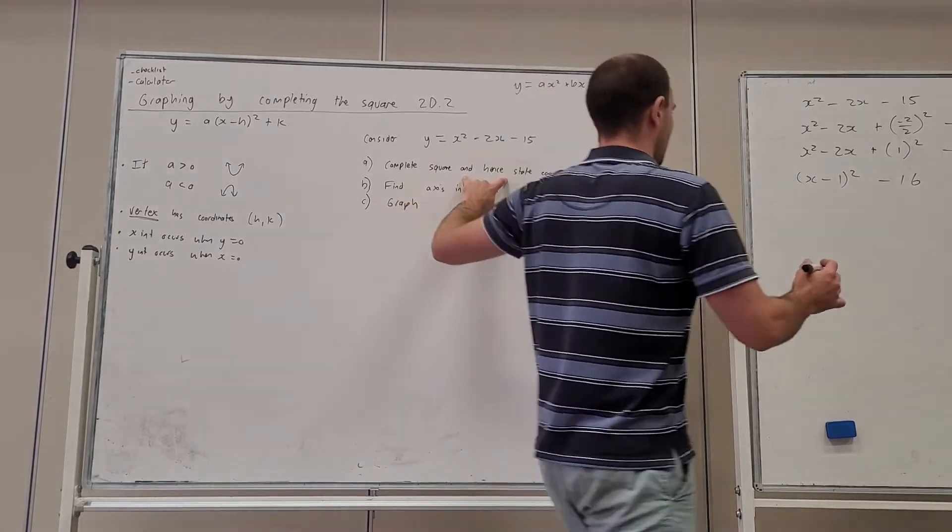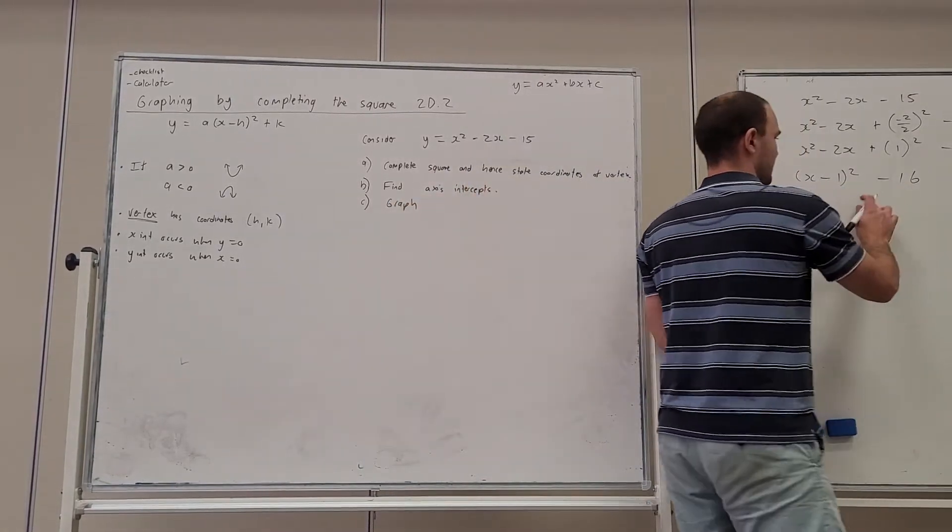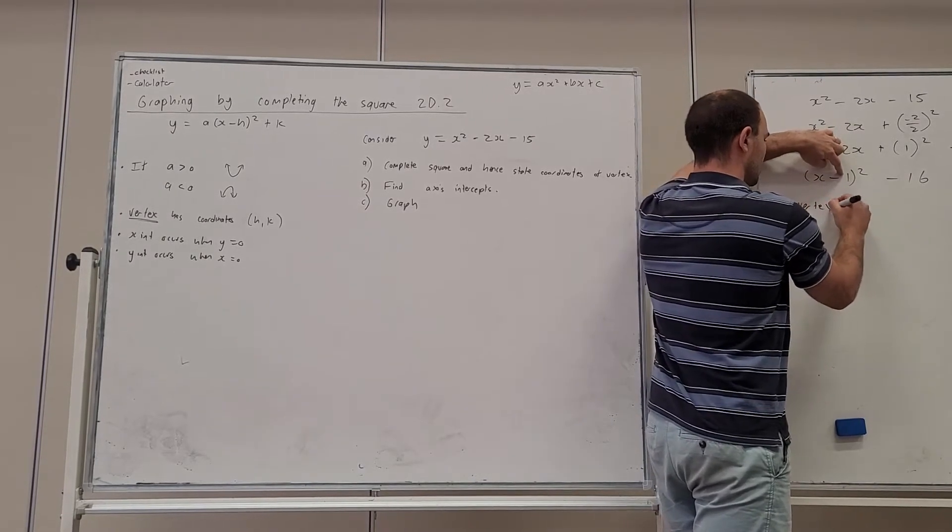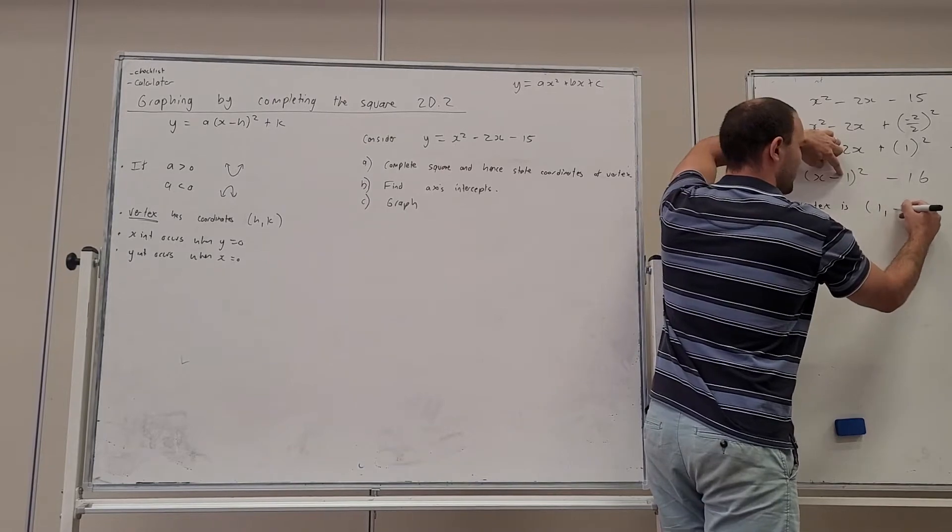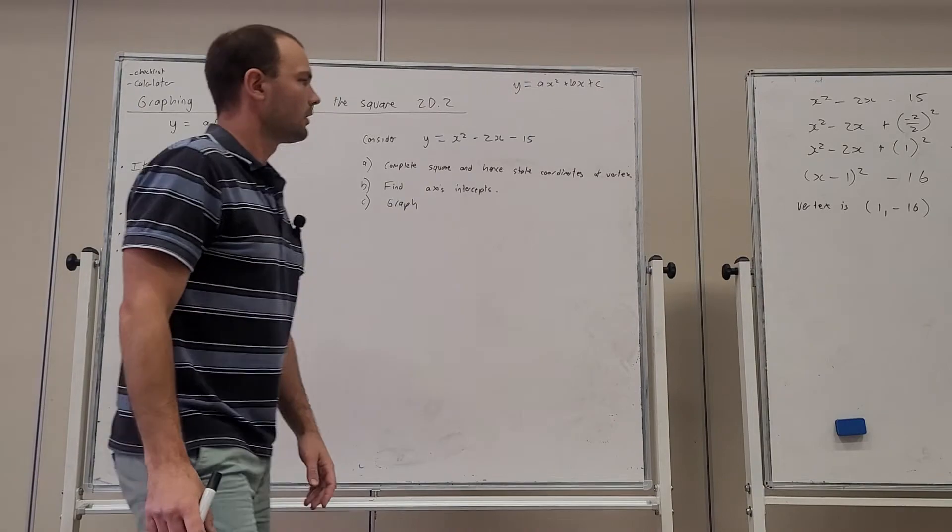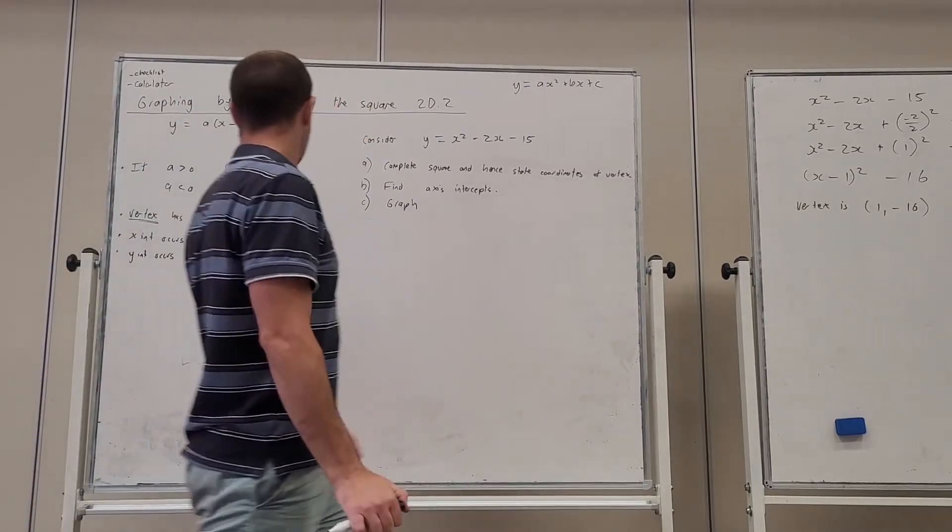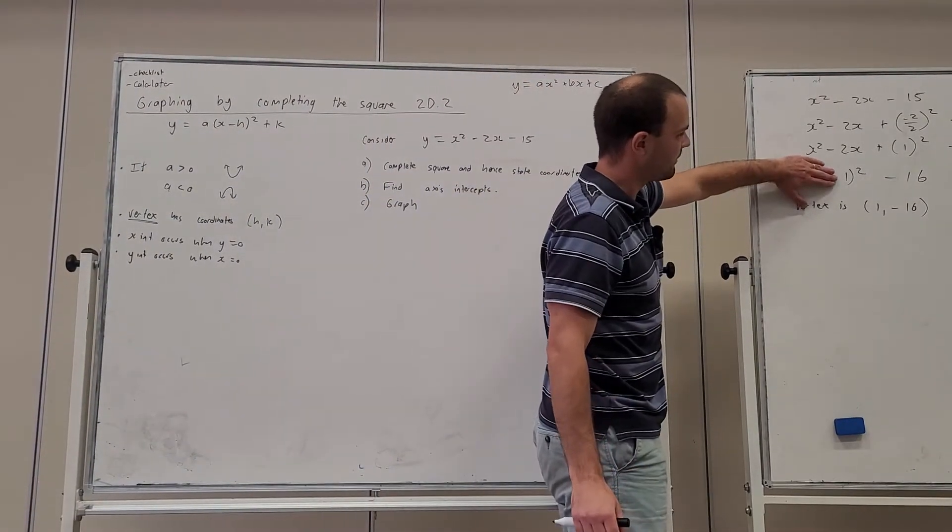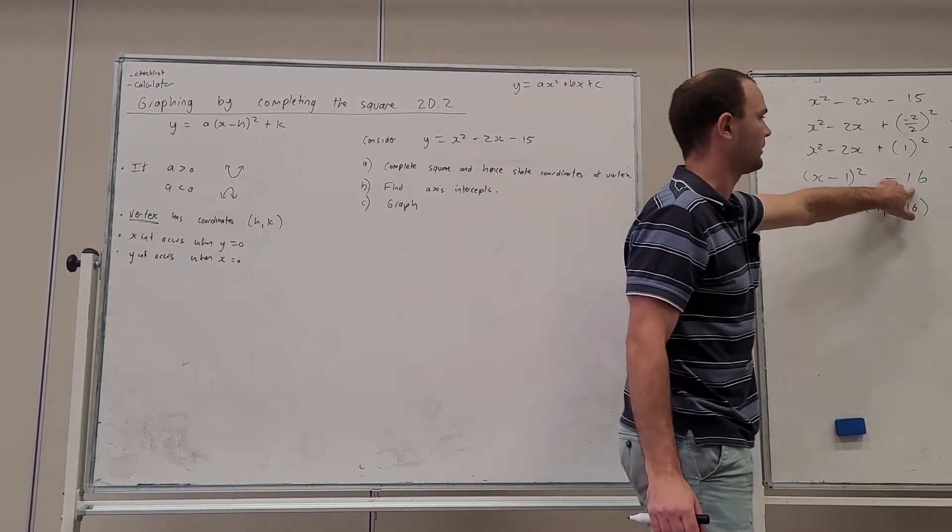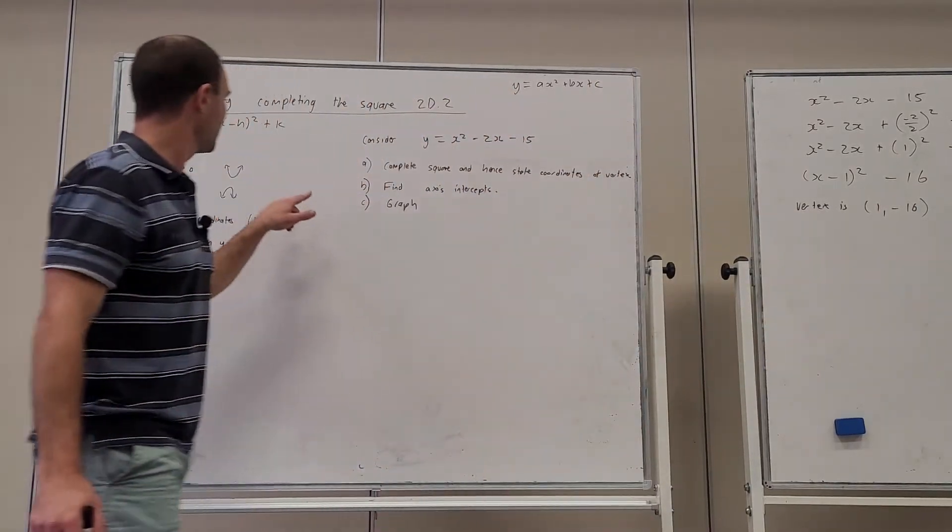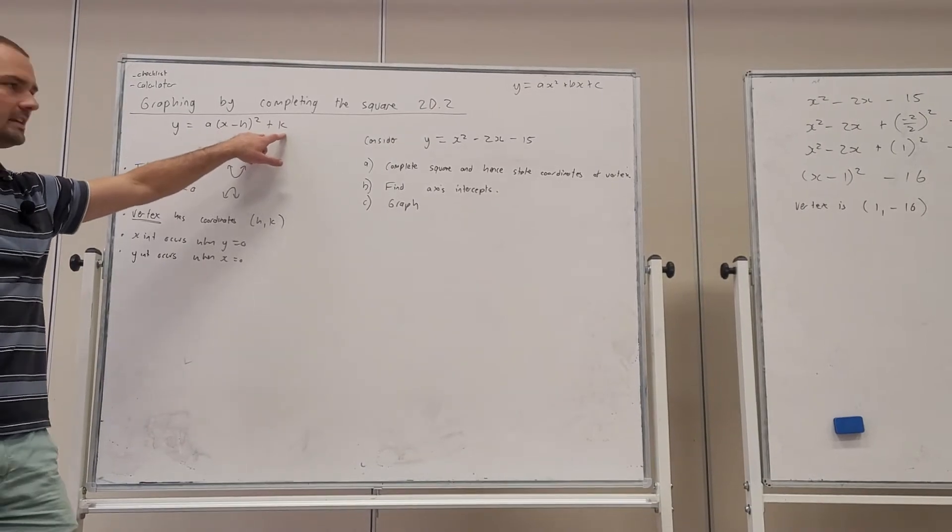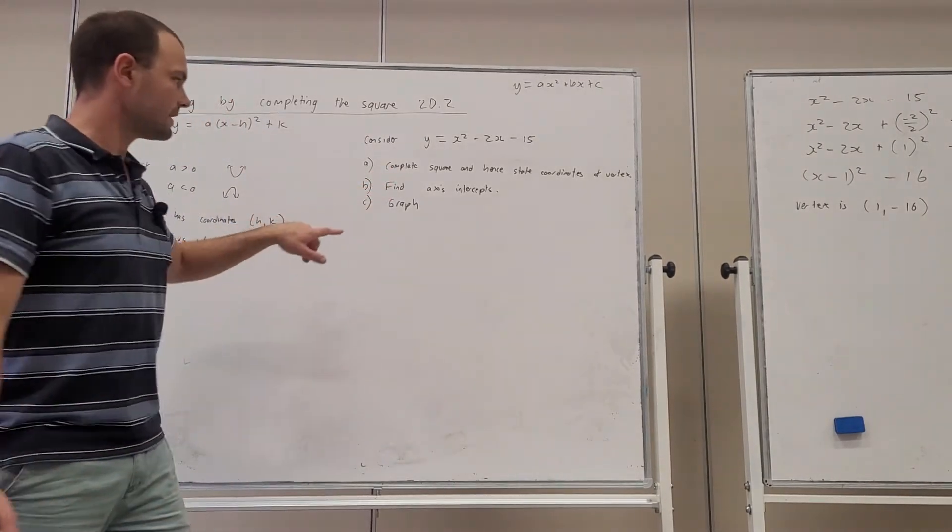So we're just completing the square as we were doing, but rather than adding it to both sides, we're going to add b on 2 squared and then subtract b on 2 squared. That's it completed. We've completed the square. State the coordinates of the vertex. Well, in this circumstance, the value of h is 1 and the value of k is minus 16.